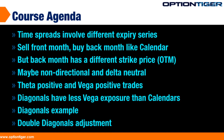The diagonal is also a time spread, which means it involves different expiry series months. Just like the calendar, you sell the front month and buy the back month. But in a diagonal, the back month has a different strike price — an out of the money strike price. So whereas in a calendar we sell the front month and buy the back month at the same strike, in a diagonal we sell the front month at the money option and buy an out of the money back month option.